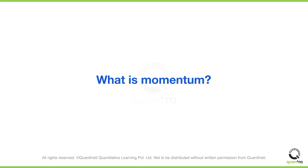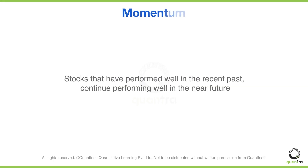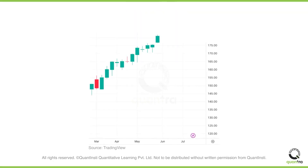Let's start by understanding what is momentum. Momentum refers to the phenomenon where stocks that have exhibited strong performance in the recent past tend to continue performing well in the near future as well. This is the price chart of Apple during the period March 2023 to June 2023. On the basis of the past performance, can you guess the future direction of the stock? Here, the price continued to move upwards.